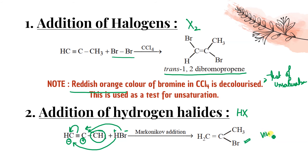This is Markovnikov addition: the negative part (X⁻) goes to the multiple-bonded carbon atom where hydrogen is less. We can explain this using Markovnikov's rule or the +I inductive effect — both give the same result.